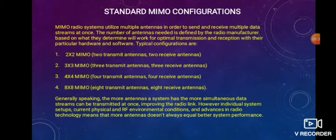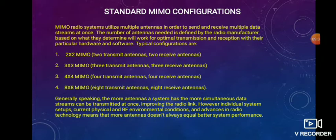Generally speaking, the more antennas a system has, the more simultaneous data streams can be transmitted at once, therefore improving a radio link. However, individual system setups, current physical and RF environment conditions, and advances in radio technology mean that more antennas don't always mean better system performance, because with an increase in antennas, data streams increase but channel conditions may not always be suitable. So sometimes it is not better to increase the number of antennas indefinitely.